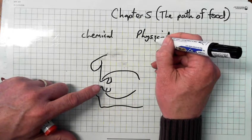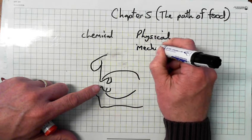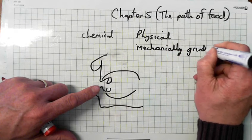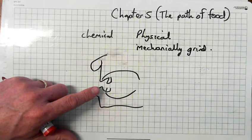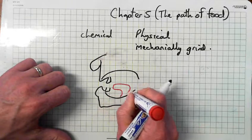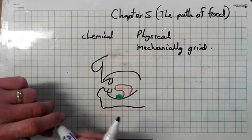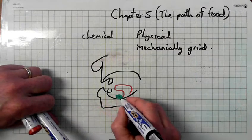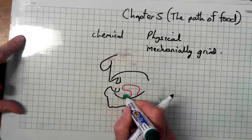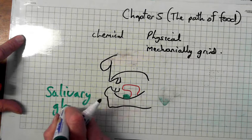What happens in your mouth? Physical digestion is when your teeth mechanically grind the food — they break it from big chunks into small chunks. And then underneath your tongue, there are glands. What do the glands produce? Saliva. This is the chemical digestion. They are called salivary glands.